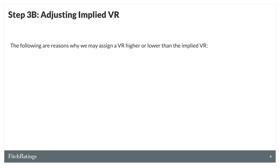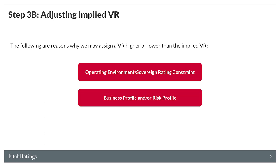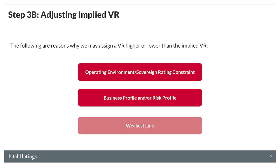There are three possible reasons. Fitch can assign a VR lower than the implied where we think the implied is too high relative to the operating environment score or the sovereign rating. The implied VR can also be adjusted if Fitch believes business profile or risk profile should have a stronger impact on the VR than the weighting would suggest. Finally, the assigned VR can be lower than implied when one or more financial factors represent a bank's weakest link, dragging down the VR based on its strong impact on our overall assessment.